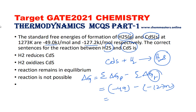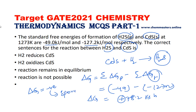That gives a value of +78.2 kJ/mol. You can see the sign of ΔG is positive. We know that whenever ΔG is negative, the reaction is spontaneous and possible, but here ΔG is positive, so the reaction is not possible. The correct option is that the reaction is not possible.